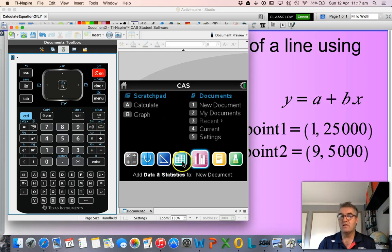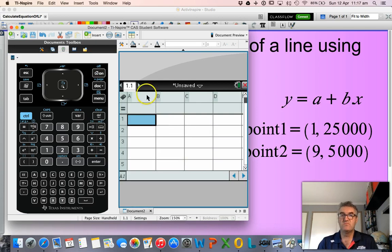I'll create a spreadsheet. I'll label my axis, yes, time and value. And we know after one year the dollar value was 25,000. After nine years the dollar value was 5,000.